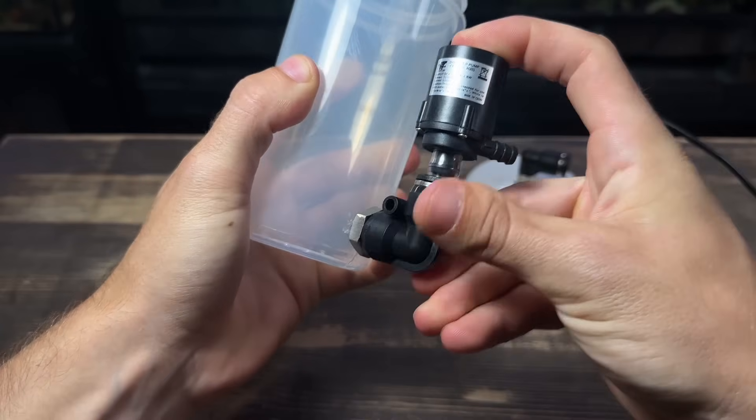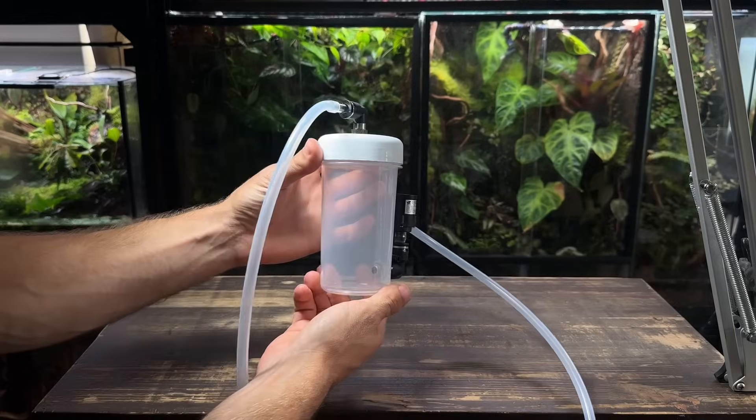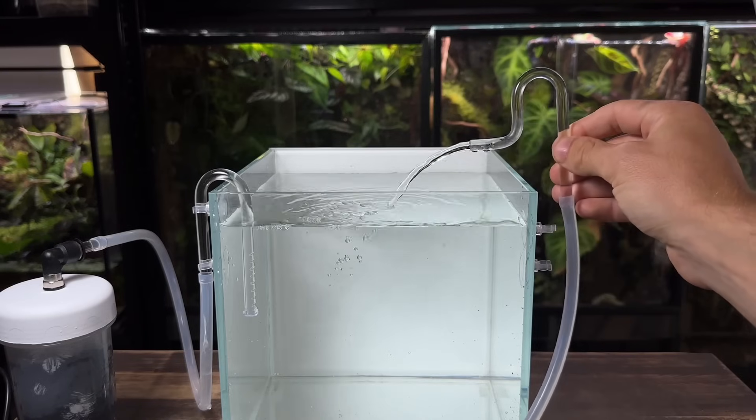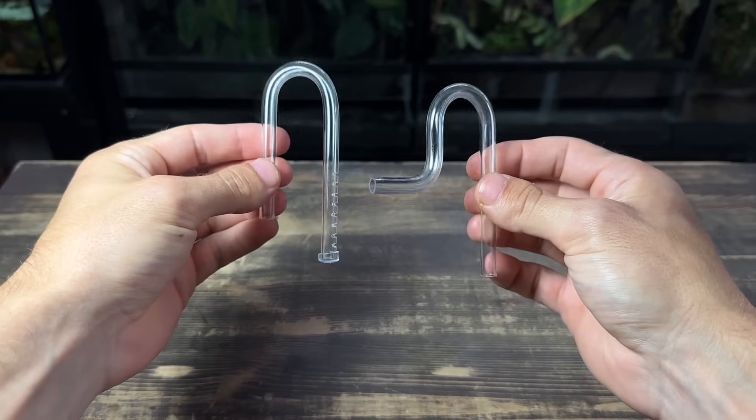In this video I'll show you how to make a mini canister filter that's perfect for nanoscapes. It's really not too hard to build and I'll even show you how to make a set of these micro lily pipes.